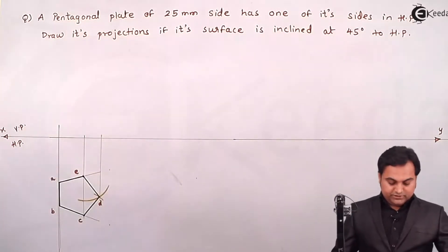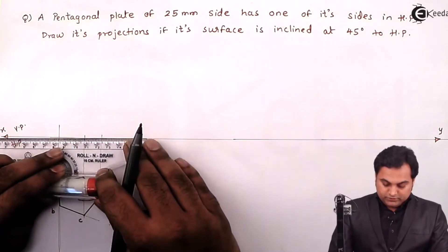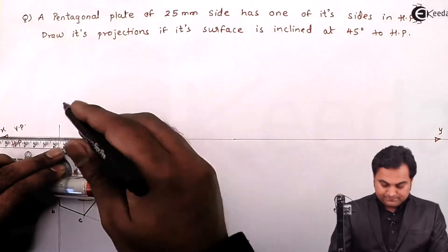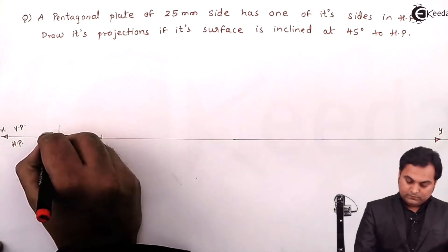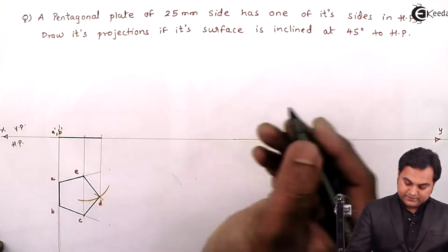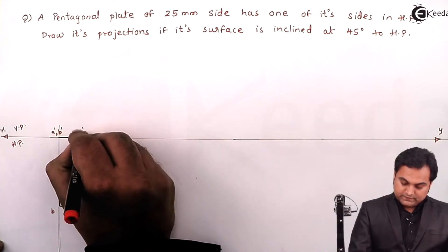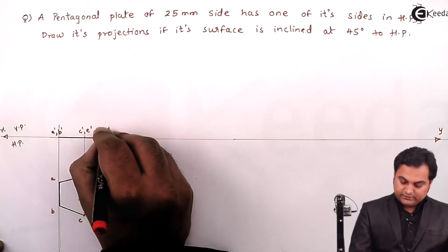Projecting the points in the front view, so this plane will appear as a line. Here the points are A', B', this is C', E', and D'.